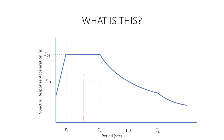For example, if I have some period T here, that period T is going to correspond to this acceleration SDS. And if I've got this other period, T2, that's going to correspond to this other response acceleration here.